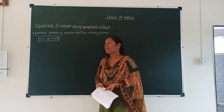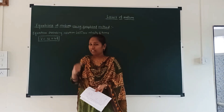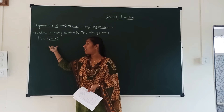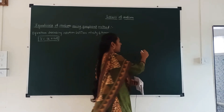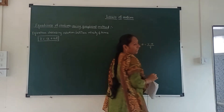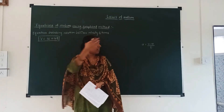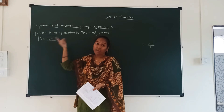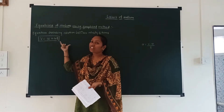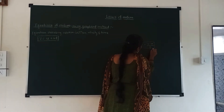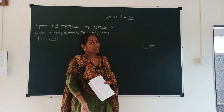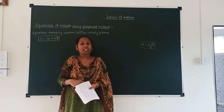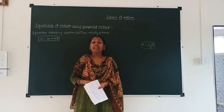What is the equation? The equation is V is equal to U plus AT. If you rearrange this equation, it becomes A is equal to V minus U divided by T. All of you know that this equation defines acceleration — acceleration is nothing but a change in velocity with respect to time, at which point the object is said to be in accelerated motion.